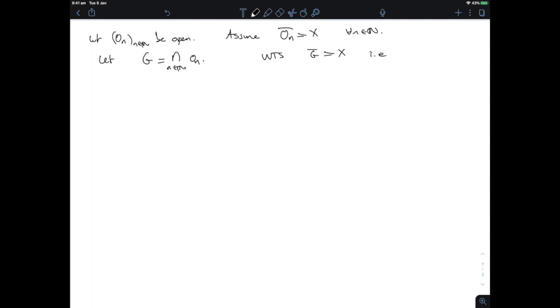Now we want to show that G is dense, and what does that mean? Well that means that for every Ω in X that is open, Ω intersect G is nonempty. So let's take an open set Ω.